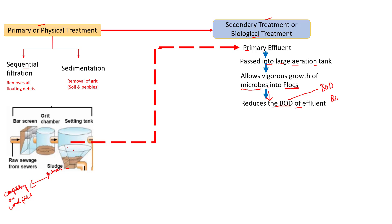Now let's discuss BOD — Biochemical Oxygen Demand, also called Biological Oxygen Demand. BOD is the amount of oxygen required by aerobic bacteria for oxidizing all the organic material present in sewage or municipal water. The flocs of bacteria and fungal filaments grow vigorously and reduce the BOD of the effluent. More BOD means more polluted water; less BOD means less polluted water.